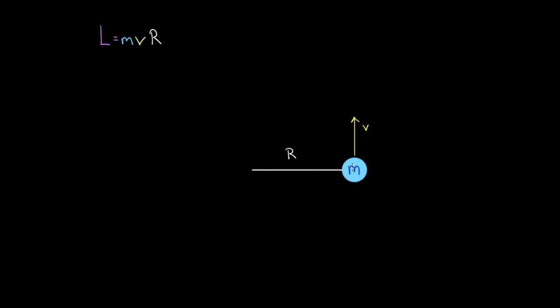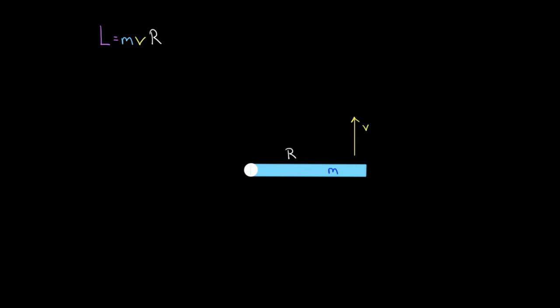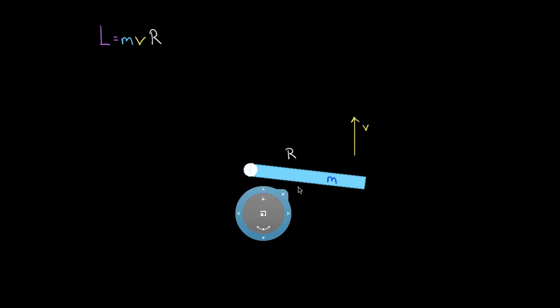But sometimes you don't have a ball going in a circle and you want to know the angular momentum. For instance, instead of that case, let's say you have a rod of mass m and radius r, and the whole rod rotates around in a circle. Let's say the outside edge travels at a speed v, just like the ball did. The question is: will this rod also have an angular momentum equal to mvr? And it won't.